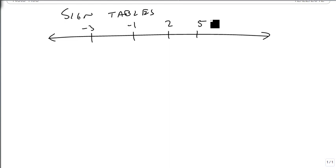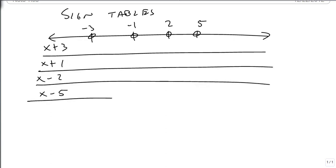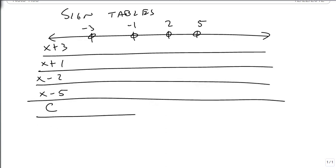2, and 5. And notice that spacing doesn't matter as much as the relative placement. And so then we're going to have factors x plus 3, x plus 1, x minus 2, and x minus 5 going across. And we're going to put the completed thing, which I'll explain in just a minute. But it's the sum total of what we're building in our sign table.